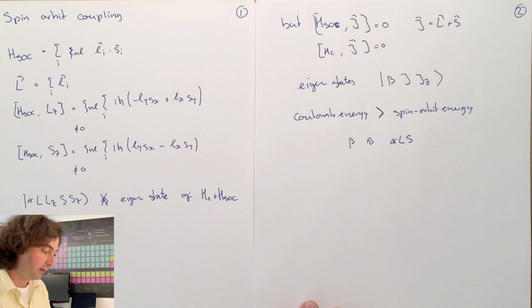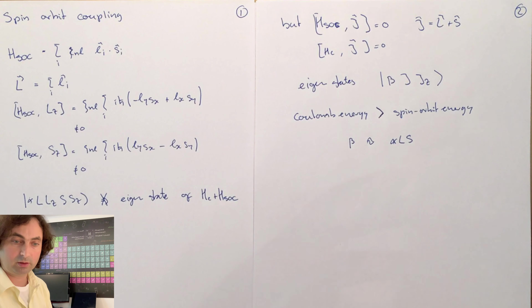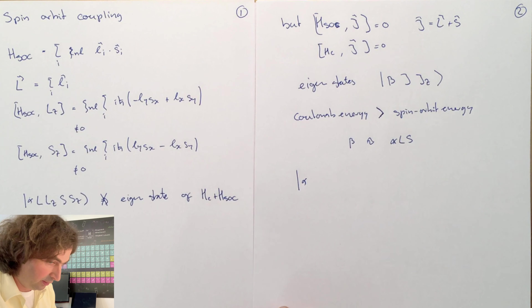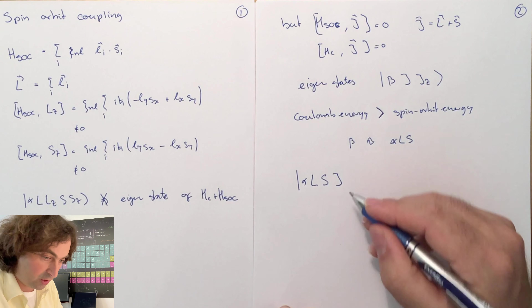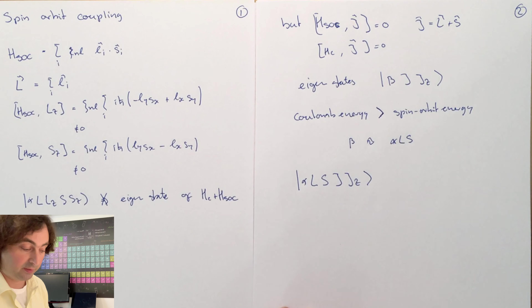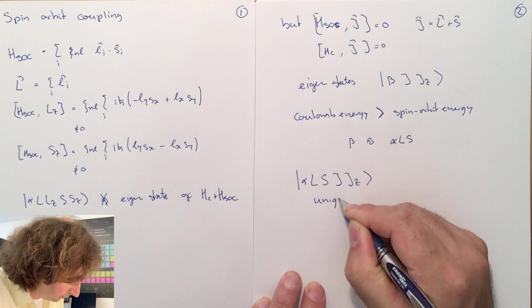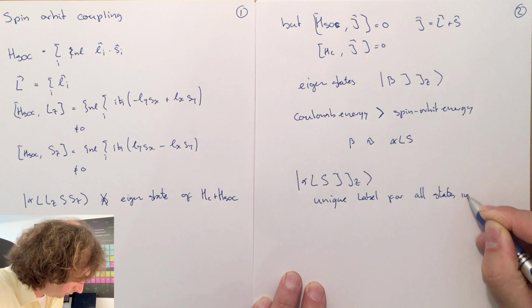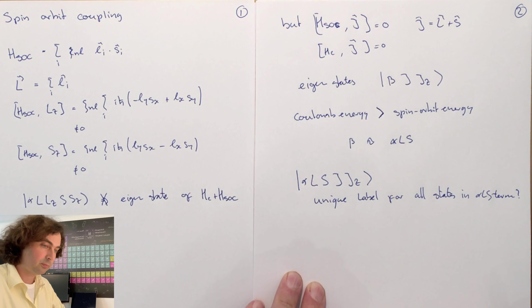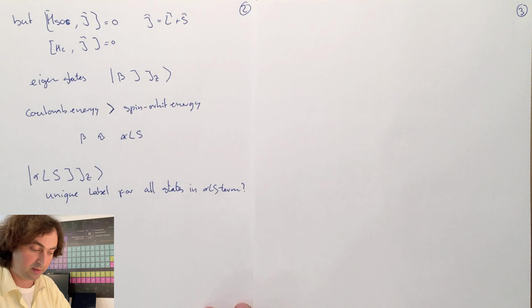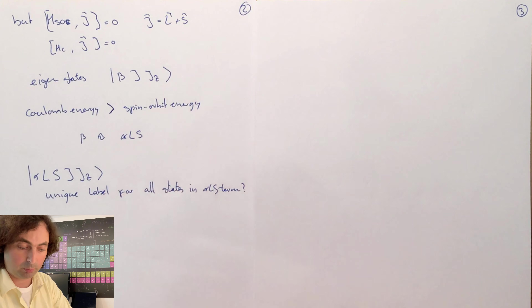So we find that within an atomic term, the spin-orbit coupling roughly lifts the degeneracy according to J and Jz, but to zeroth order doesn't mix the different atomic terms, such that we can label our states still by alpha, L and S, and then J and Jz. Now we should ask ourselves: is this a unique label to label all states within an atomic term?